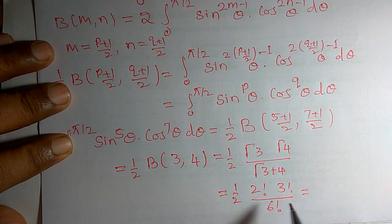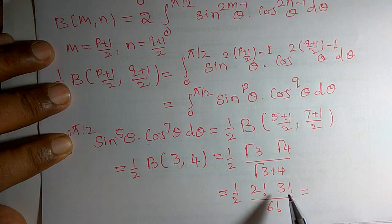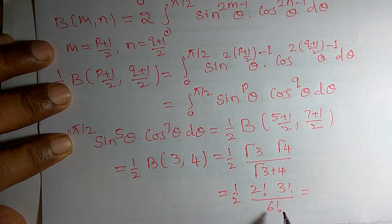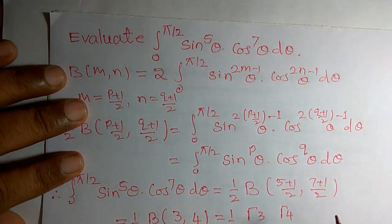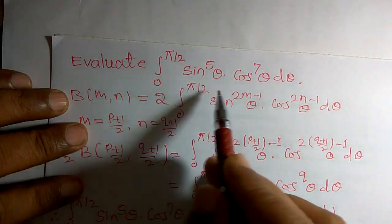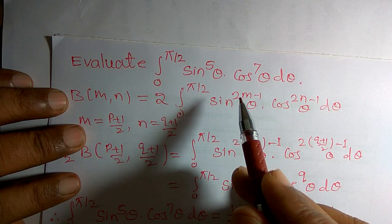Again, you can simplify. 1 by 2 times 2 factorial means 2 into 1 into 3 factorial means 3 into 2 into 1 divided by 6 factorial means 6 into 5 and so on up to 1. I hope we can simplify. You will get the required answer for the given integral.